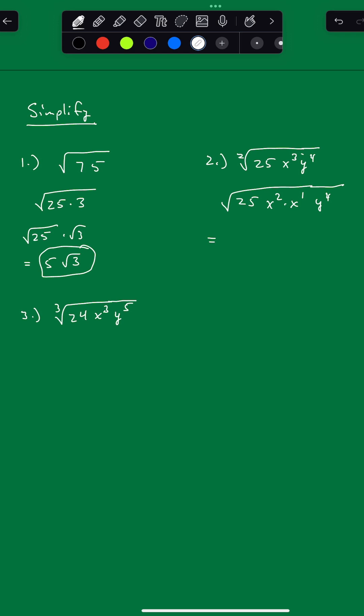So our answer: square root of 25 is 5. 2 goes into 2. Now for the x squared, 2 goes into 2 one time, so that's x. x to the 1st, that's not a perfect square. It's going to stay under the radical.